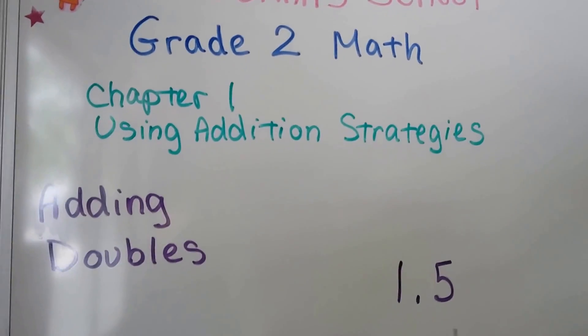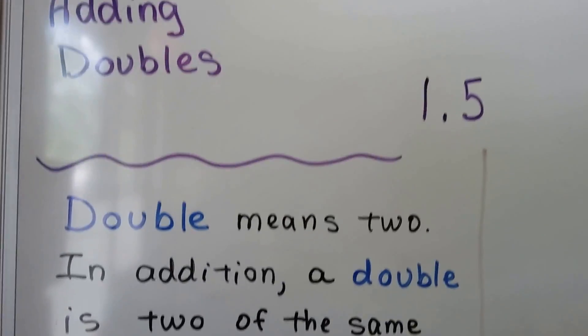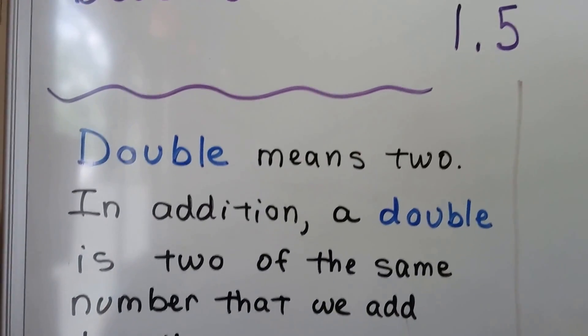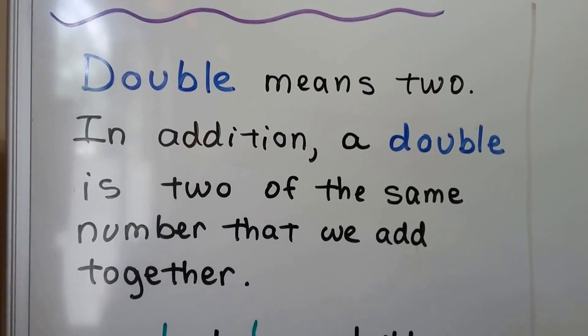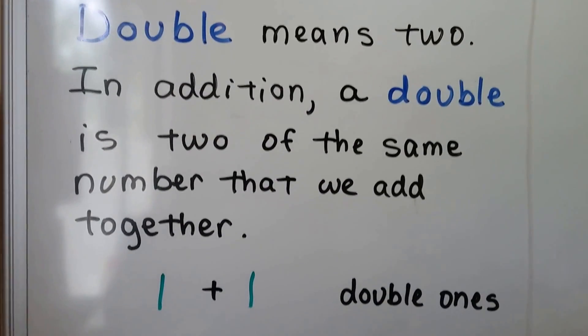Adding Doubles, Lesson 1.5. Double means two. In addition, a double is two of the same number that we add together.